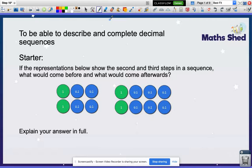Good morning everybody. So today's lesson is describing and completing decimal sequences. If the representations below show the second and third steps in a sequence, what would come before and what would come afterwards?